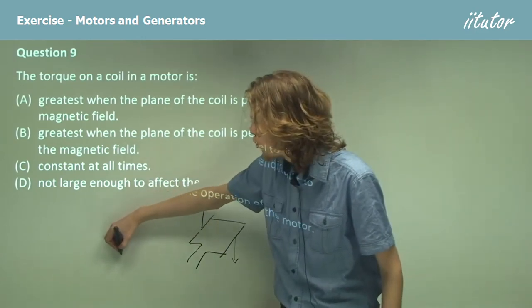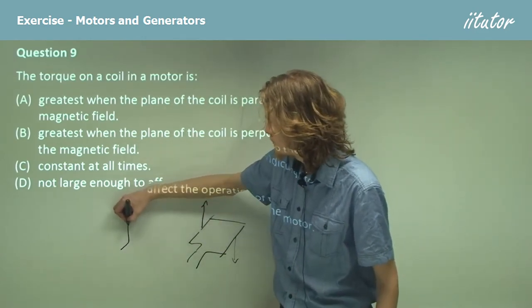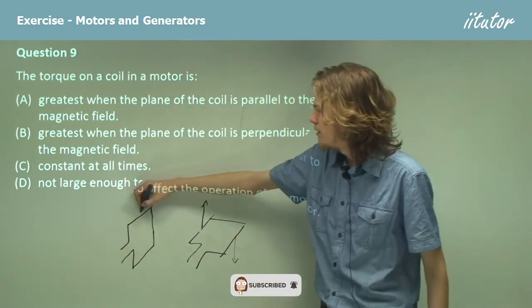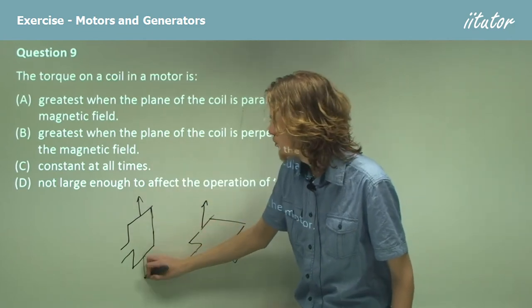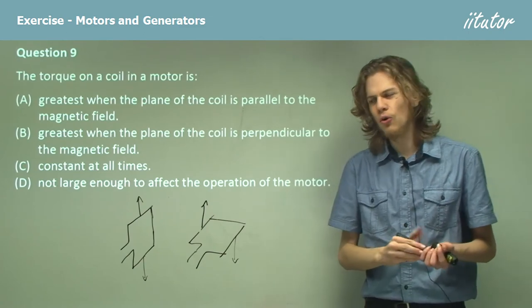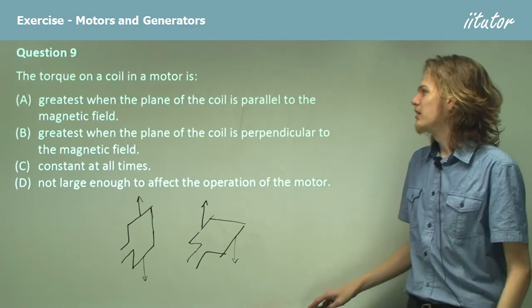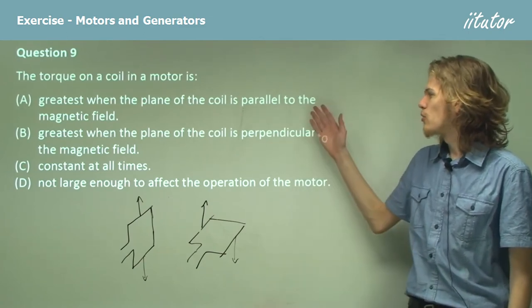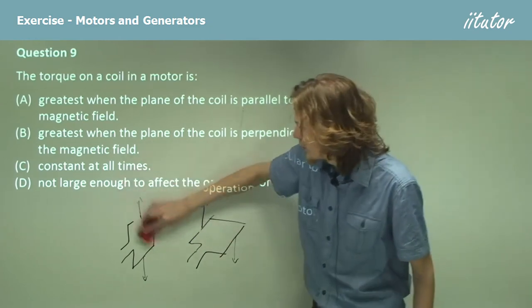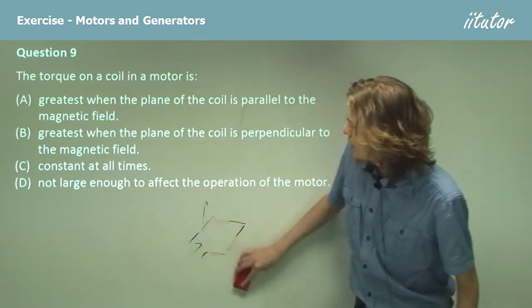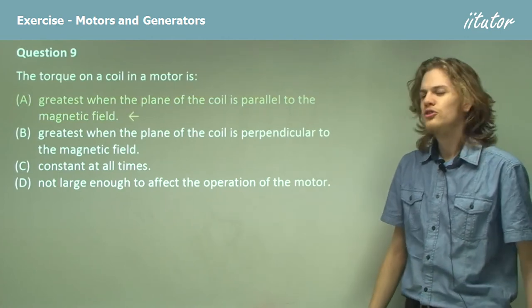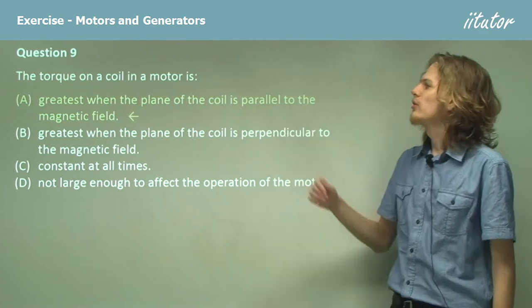If on the other hand it's already standing up vertically and looks more like this, then the forces produced will just pull straight up and down. They won't actually turn the coil at all. This means that when the plane of the coil is perpendicular to the magnetic field, we in fact get no torque. So you can see that we get maximum torque during A, when the coil is parallel to the magnetic field.